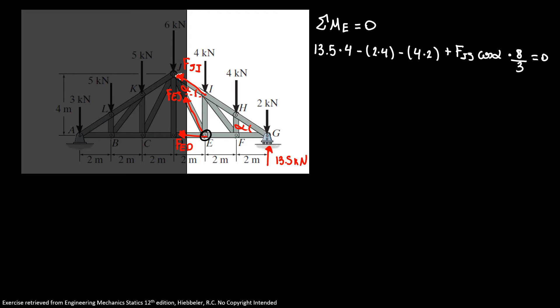Plus our F_IJ cosine of alpha times 8 over 3 equals 0. 8 over 3 because this triangle here, our triangle IGE, has a height of 8 over 3. So 8 over 3 is the height of the triangle JGE.